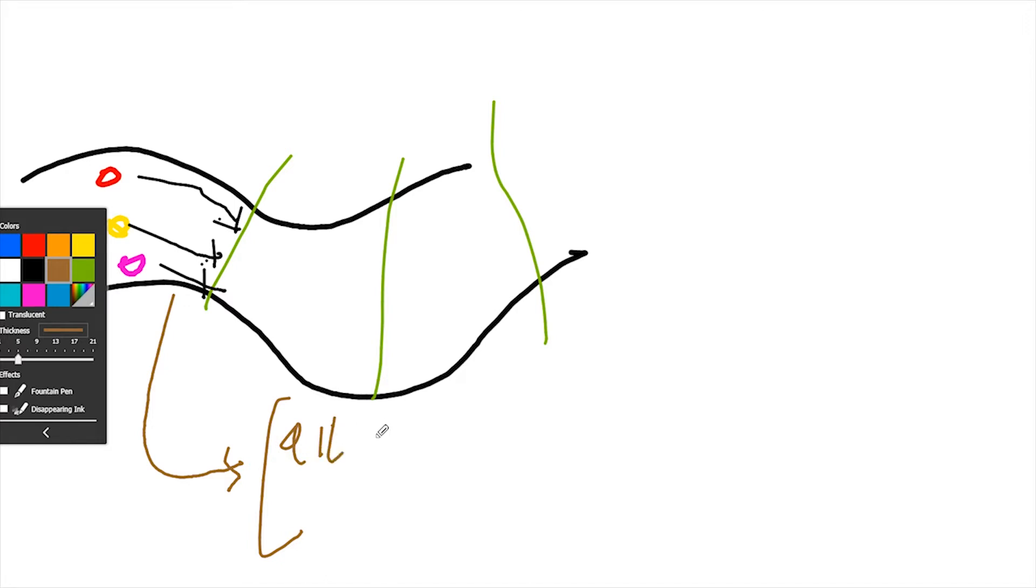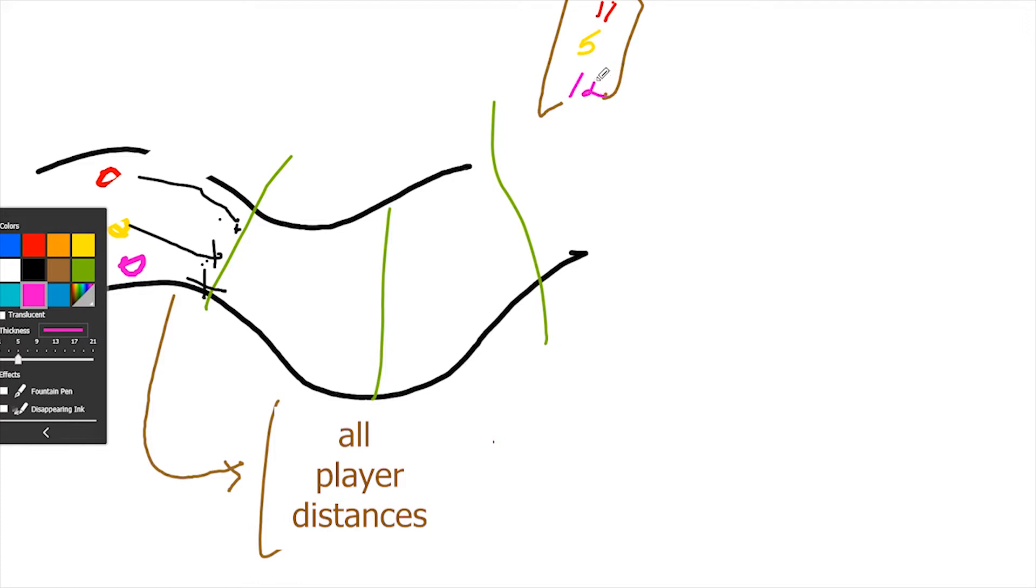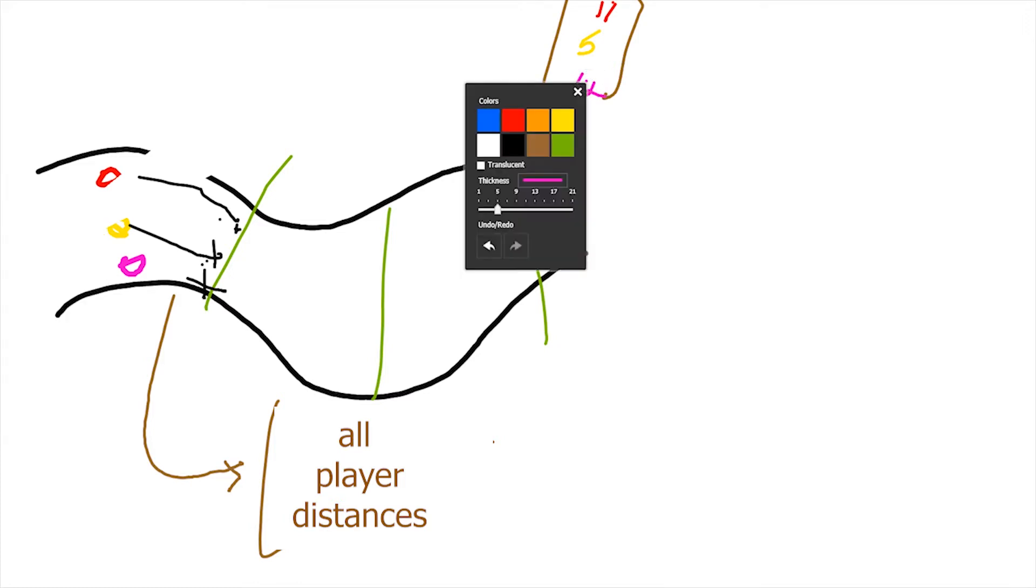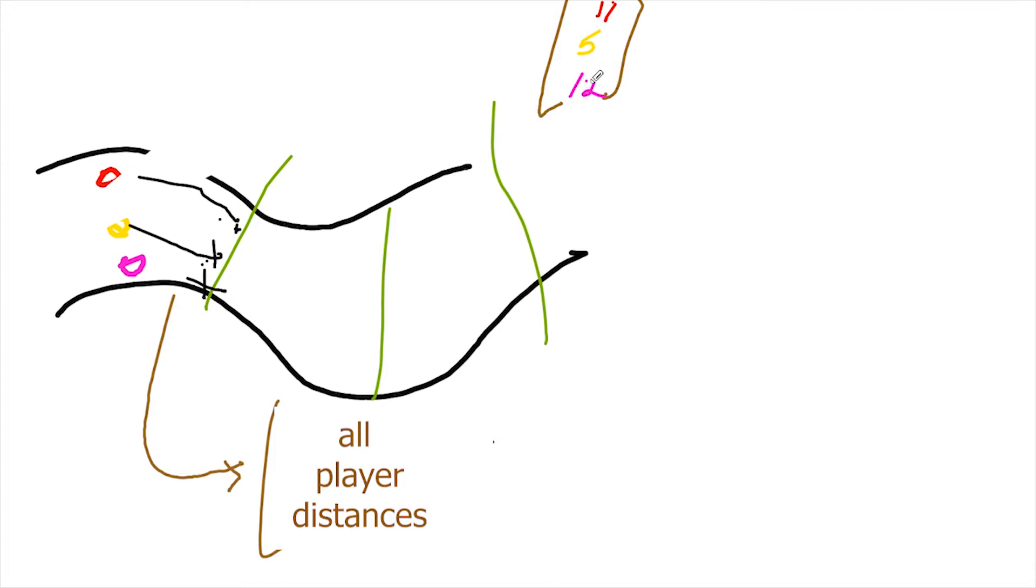Those distances we got from the waypoint, we're going to pipe all of them to an array. The array is going to contain all player distances. Imagine the player distance for player one to this waypoint is 11, the distance for player two is 5, and player three's value is 12.